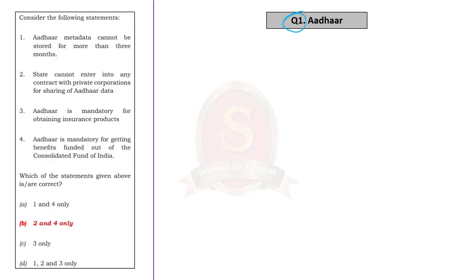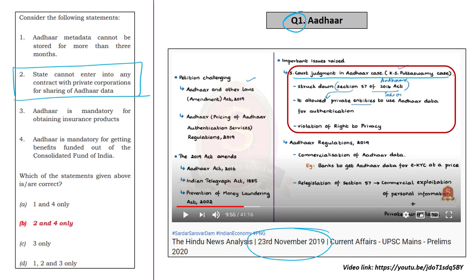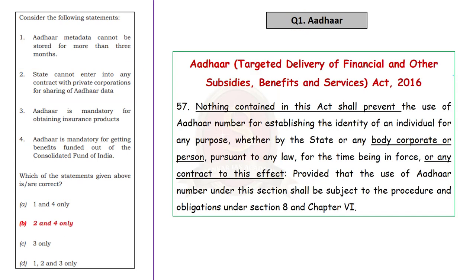Let's take the first question in Set A. It is based on Aadhaar. The second statement of this question revolves around whether the state can or cannot enter into any contract with private corporations for sharing of Aadhaar data. We have discussed about this on 23rd November 2019 in the News Analysis, where we mentioned the 2018 judgment — Justice K.S. Putaswamy and another versus Union of India and others. In this case, the Supreme Court struck down the last phrase in the main provision of Section 57 of Aadhaar Act of 2016 — which is the Aadhaar Targeted Delivery of Financial and Other Subsidies, Benefits and Services Act of 2016. The last phrase struck down was 'or any contract to this effect.' So, this makes Statement 2 correct.